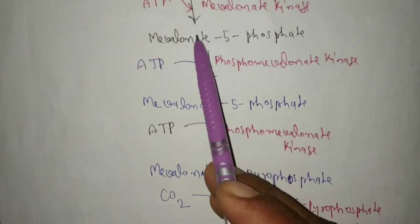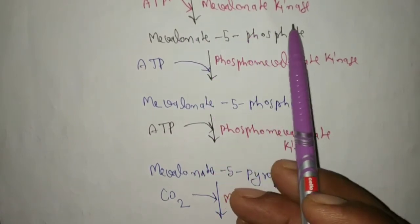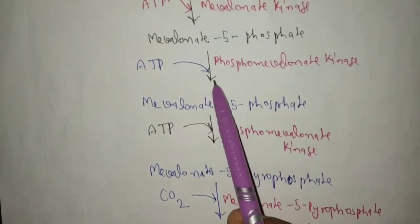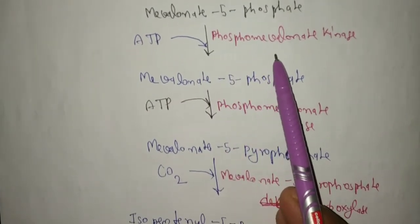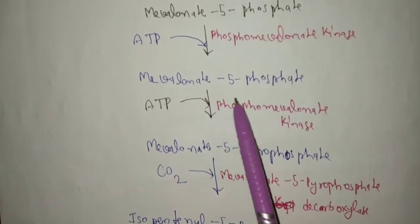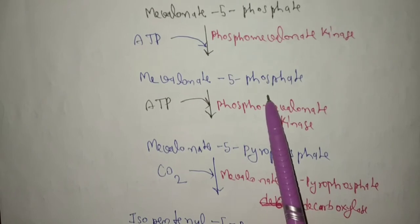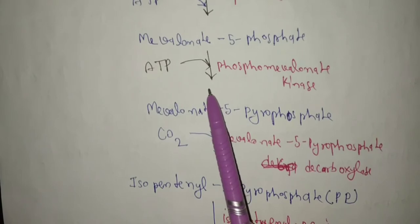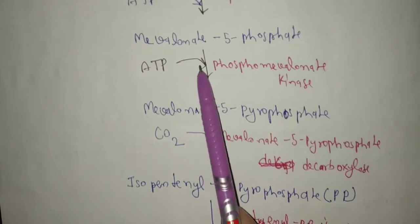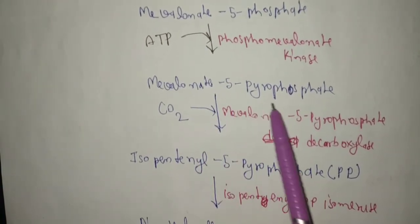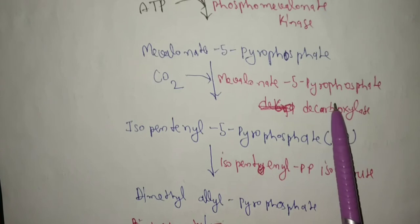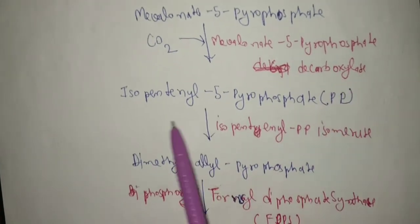After conversion of mevalonic acid, in the presence of ATP, mevalonate kinase enzyme converts mevalonic acid to mevalonate-5-phosphate. Further, in the presence of ATP, phosphomevalonate kinase converts mevalonate-5-phosphate to mevalonate-5-pyrophosphate. Then, by addition and removal of carbon dioxide, mevalonate-5-pyrophosphate decarboxylase converts it further.